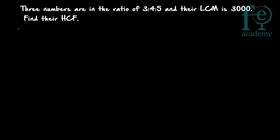So how can you proceed with this question? We are taking HCF equal to x. Let the highest common factor of these 3 numbers be x. If x is the highest common factor, then what will be these 3 numbers? These 3 numbers will be 3x, 4x, and 5x.